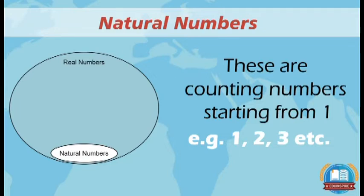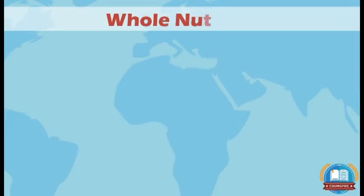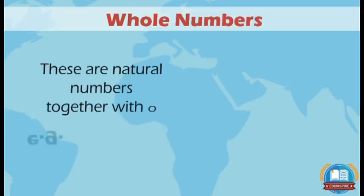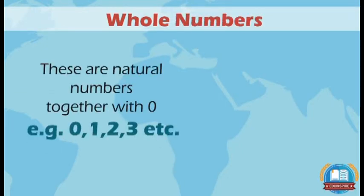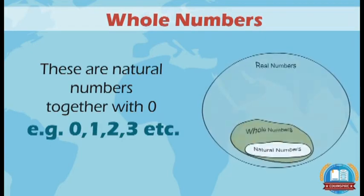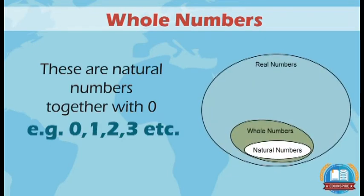The second component of real numbers is whole numbers. These are natural numbers together with 0. Example: 0, 1, 2, 3, etc.